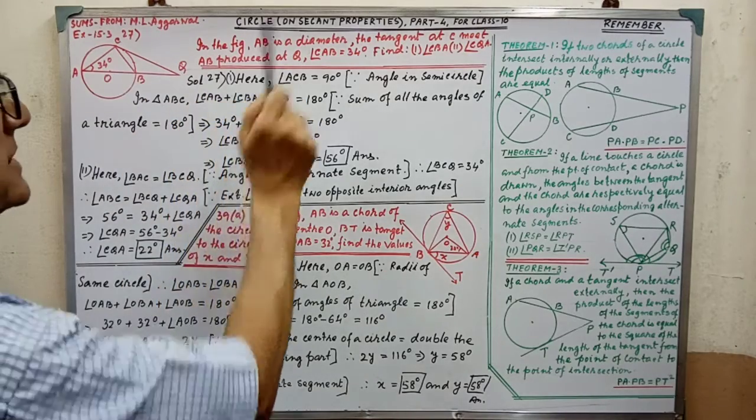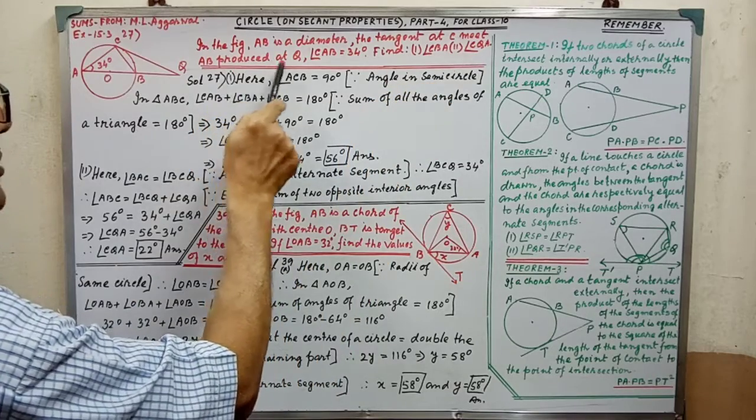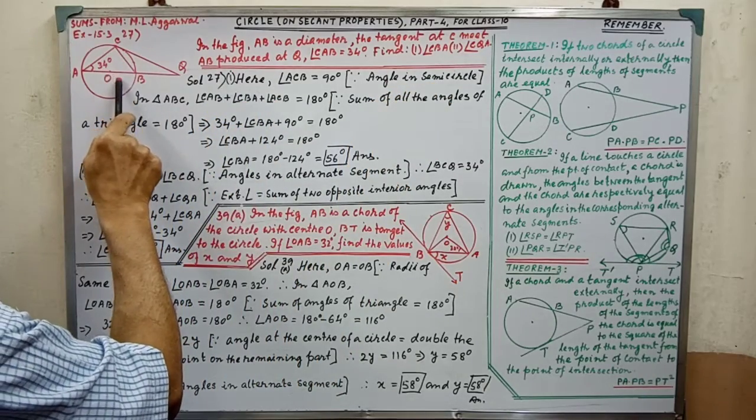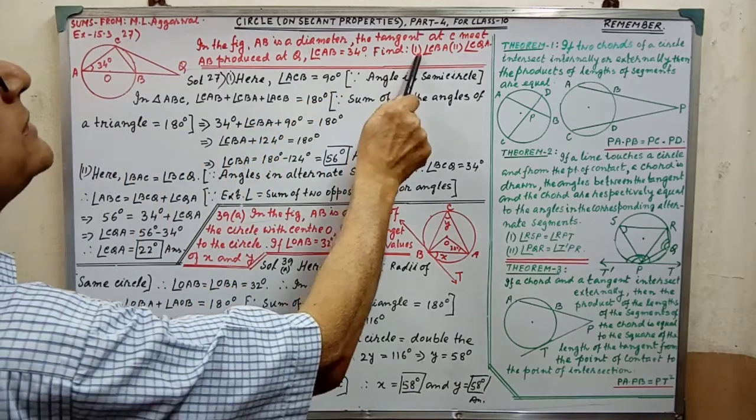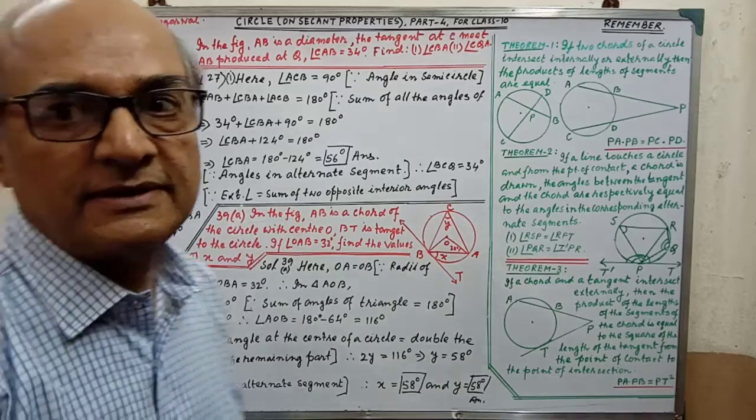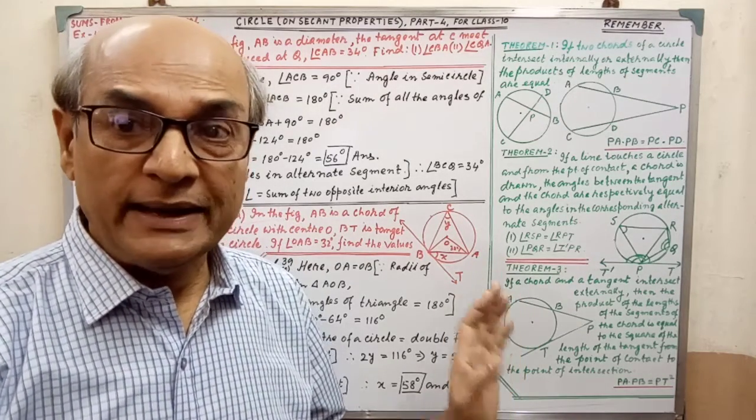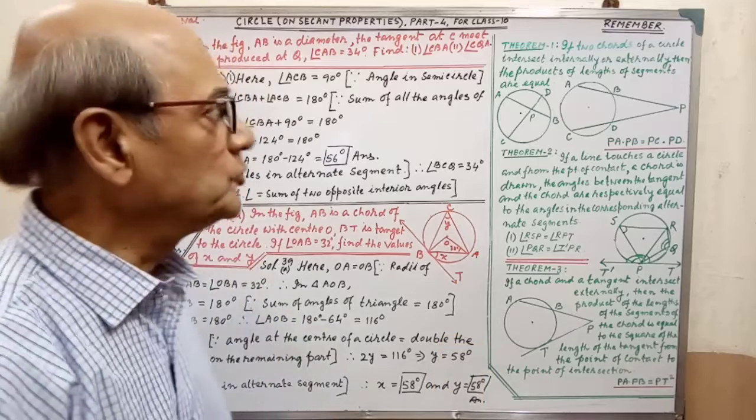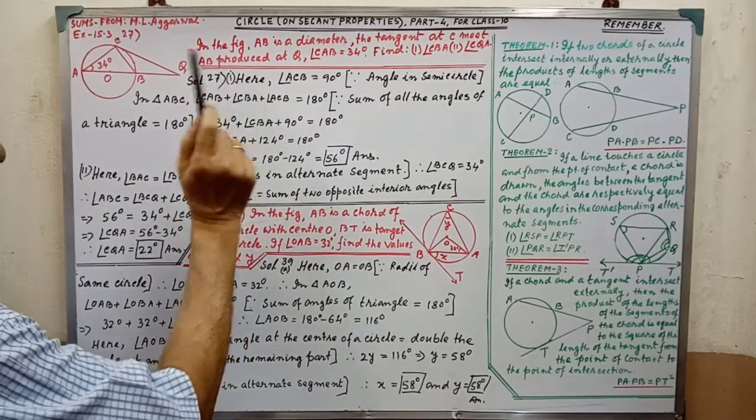All these two sums are given from ML Aggarwal. In the figure, AB is the diameter, that tangent at C meet AB produced at Q, that is diagram. And angle CAB equal to 34, we have to find these two angles. Here diagram is given in the question. In answer, you have to draw the diagram. After drawing the diagram, then you will start the solution.